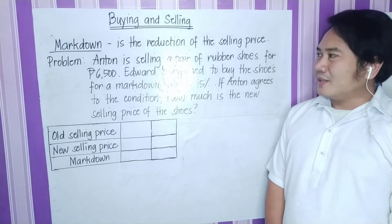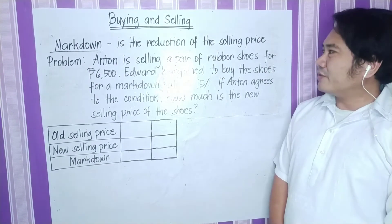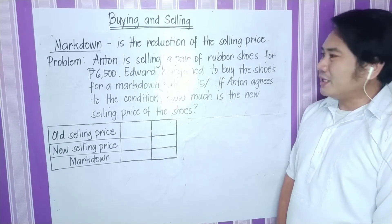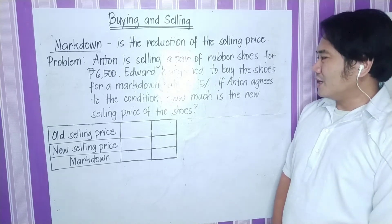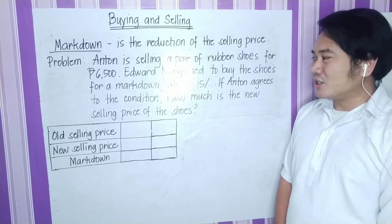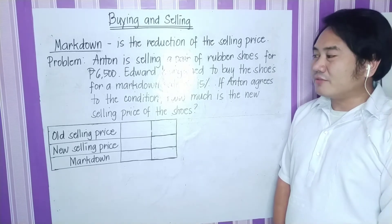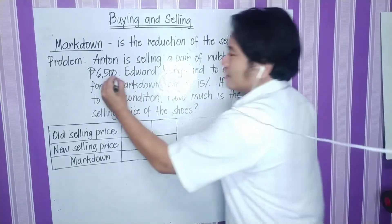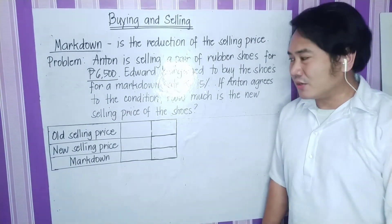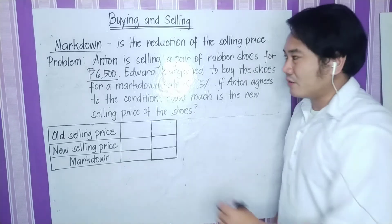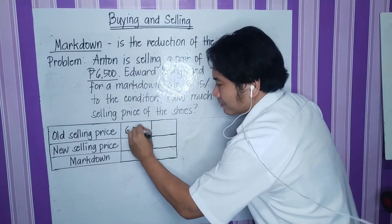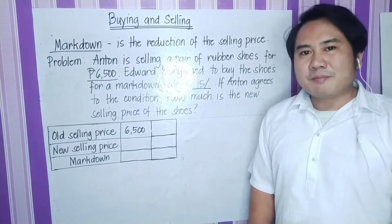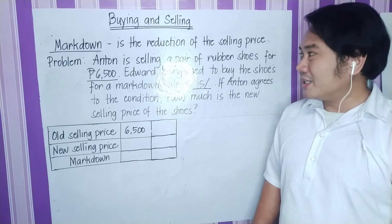Next problem. Anton is selling a pair of rubber shoes for P6,500 pesos. Edward bargained to buy the shoes for a markdown rate of 15%. If Anton agrees to the condition, how much is the new selling price of the shoes? The given: P6,500 pesos is the old selling price of the rubber shoes, and 15% is the markdown rate bargained by Edward.